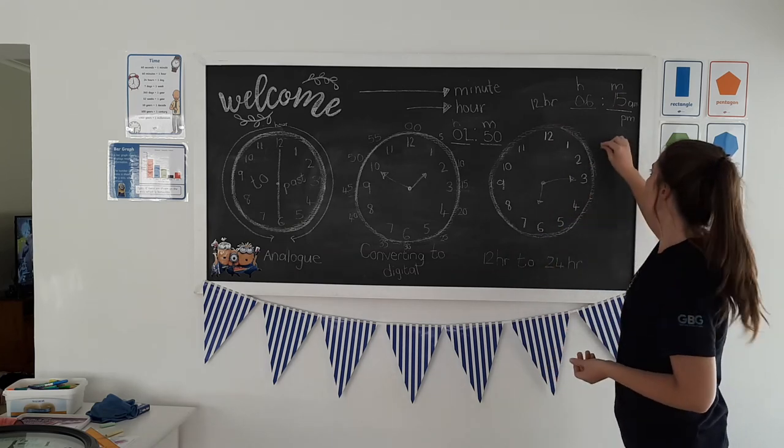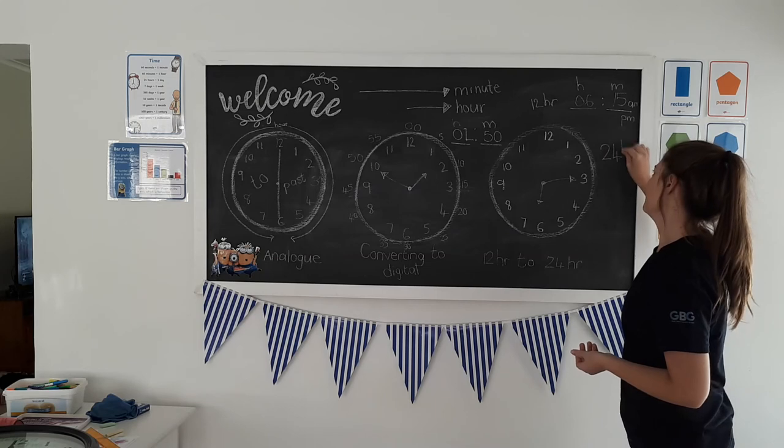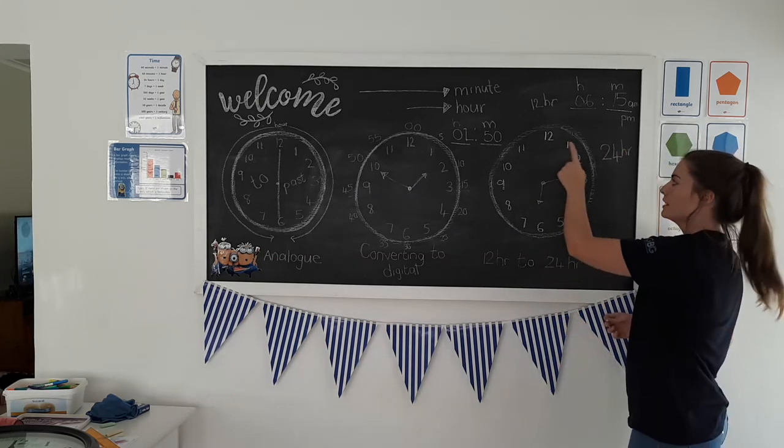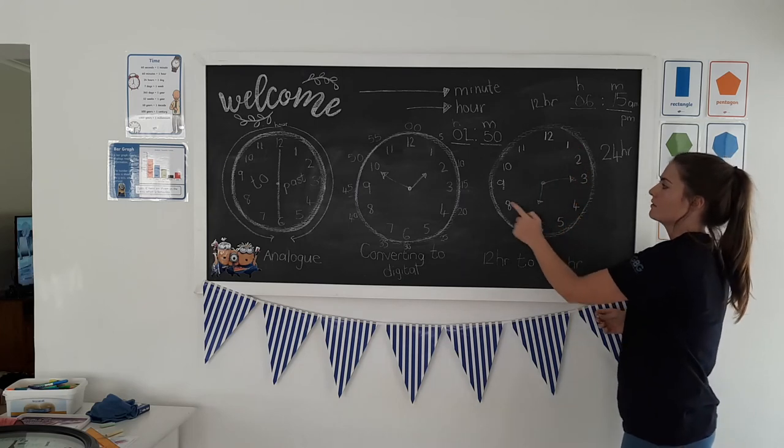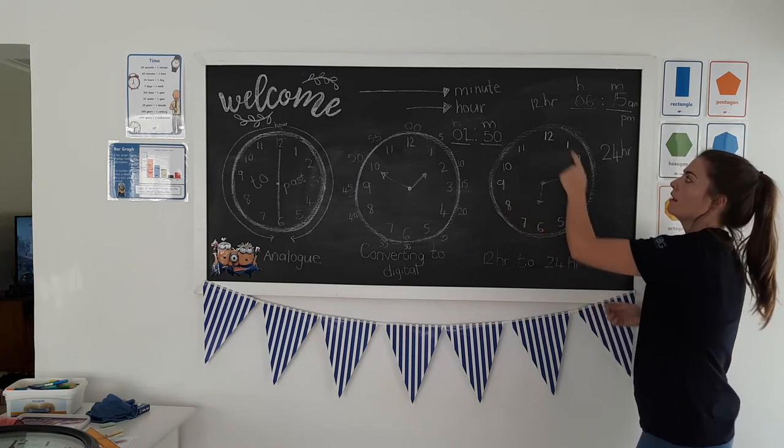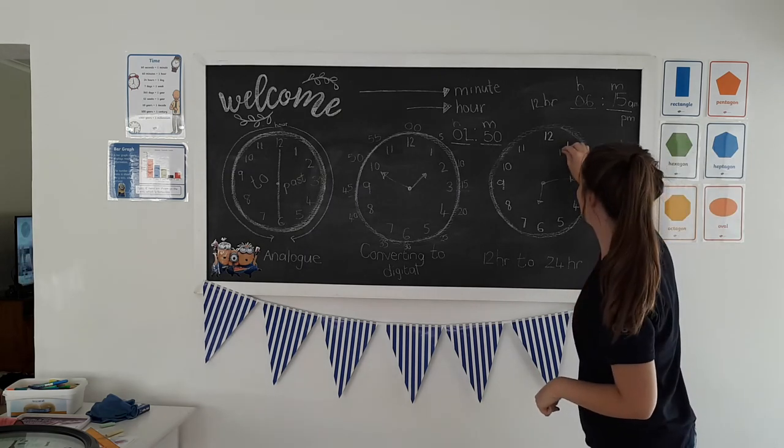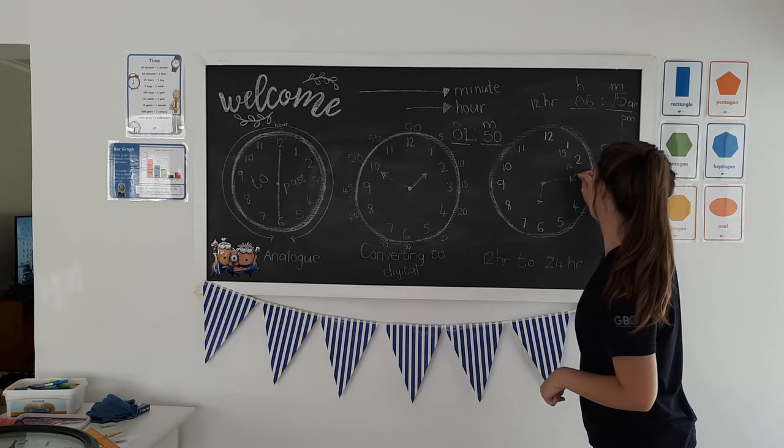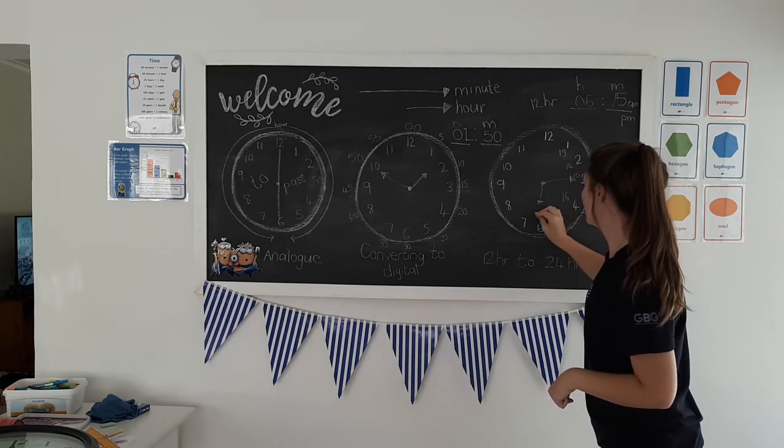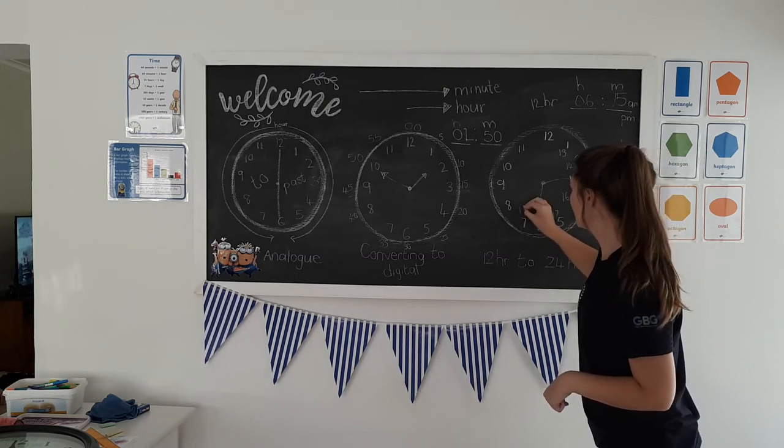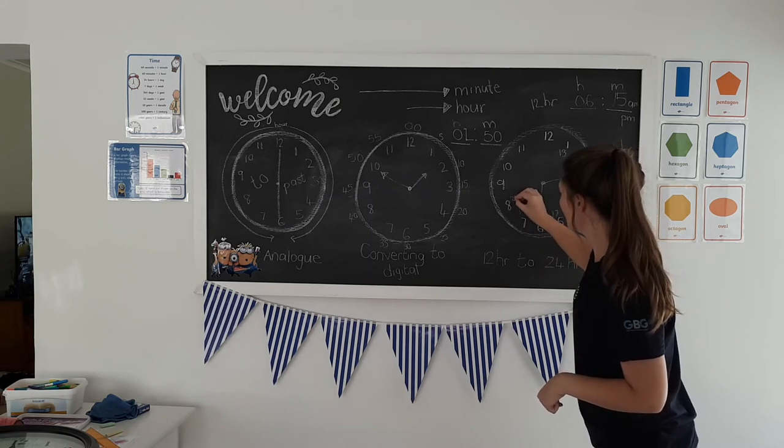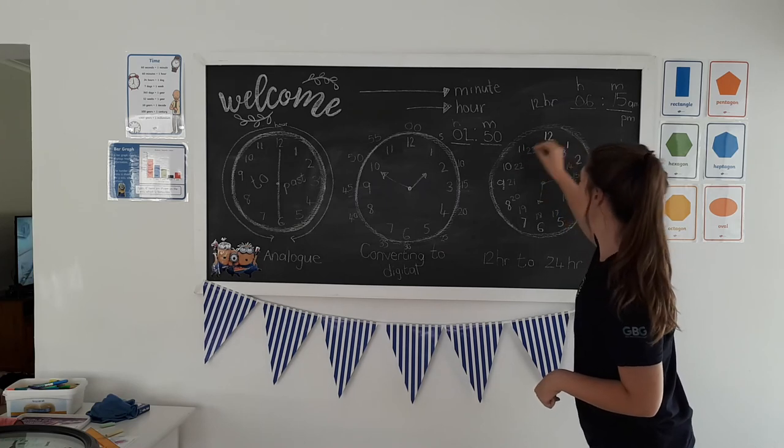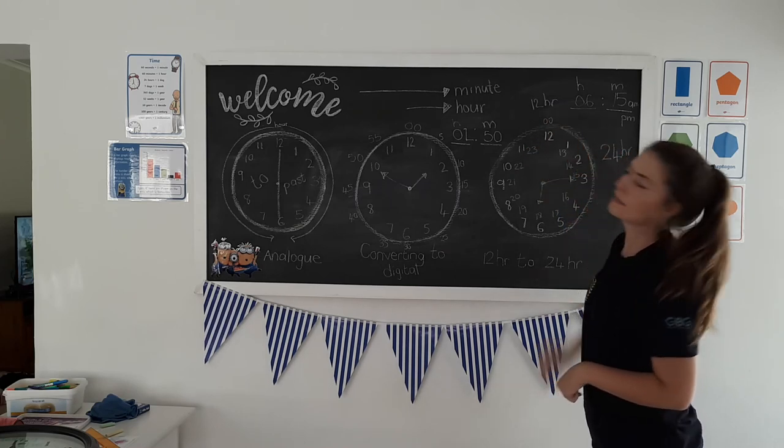But on a 24-hour clock, there are 24 hours. So it goes one, two, three, four, five, six, seven, eight, nine, ten, eleven, twelve, thirteen, fourteen, fifteen, sixteen, seventeen, eighteen, nineteen, twenty, twenty-one, twenty-two, twenty-three, and then zero-zero. So there are 24 hours.